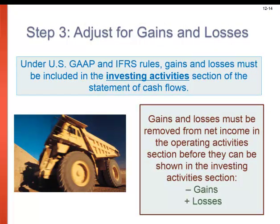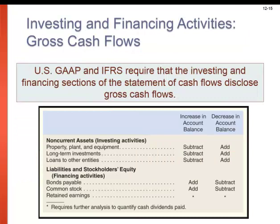In step three, we're going to adjust for the gains and losses from investing and financing activities, as required by GAAP. We need to isolate those and remove them from our net income. We will find the change from the beginning to the ending balance on accounts like PP&E and long-term investments, as well as common stock and retained earnings, and add or subtract it back into our net income based on whether it was an increase or decrease.